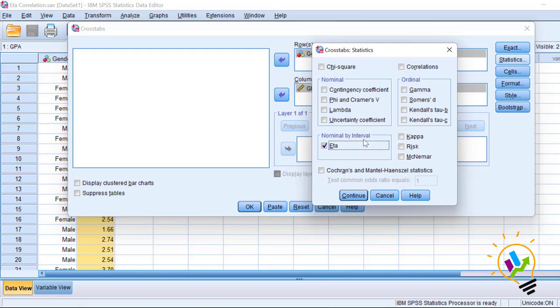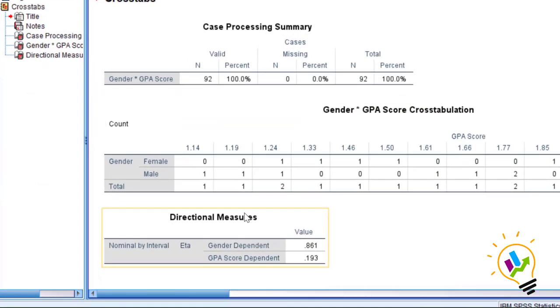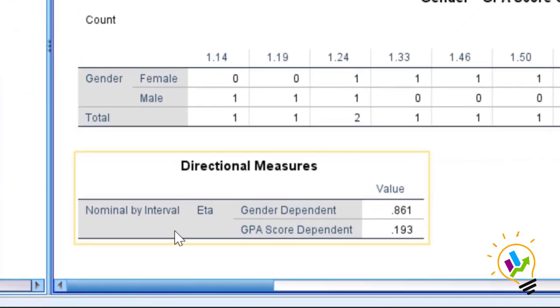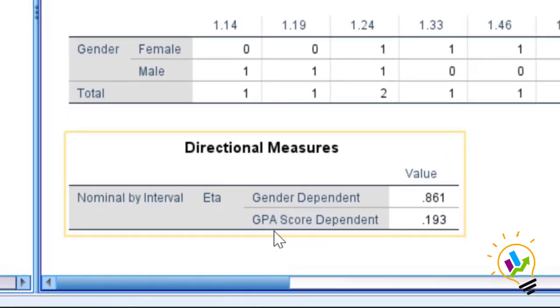Now here you see the directional measures. The important thing is you must see GPA score which is dependent, because we already said nominal must be independent variable and the scale data must be dependent variable. We must not see gender dependent variable. You must see GPA score which is dependent. Here the value is 0.193.